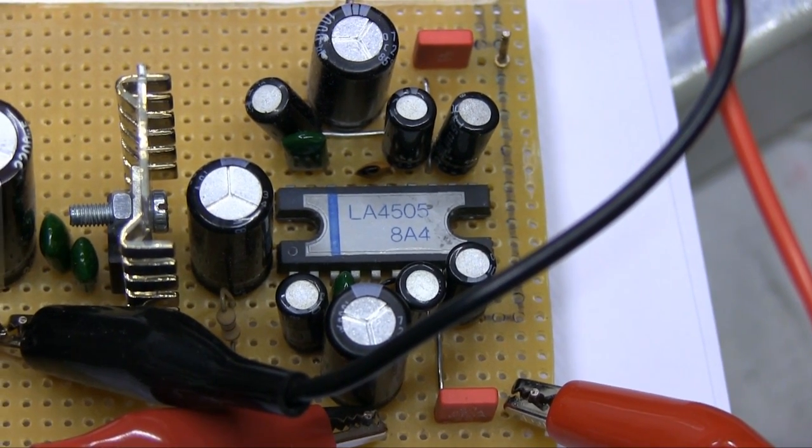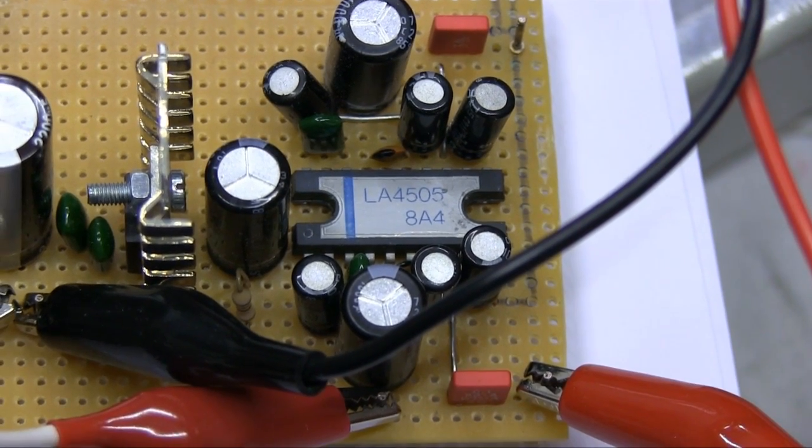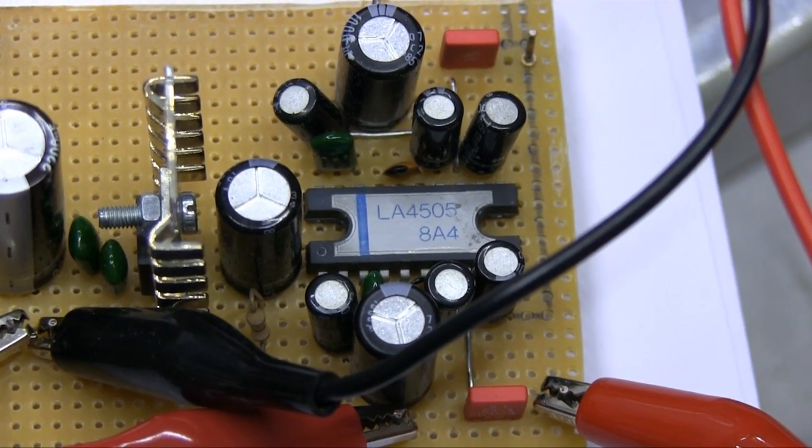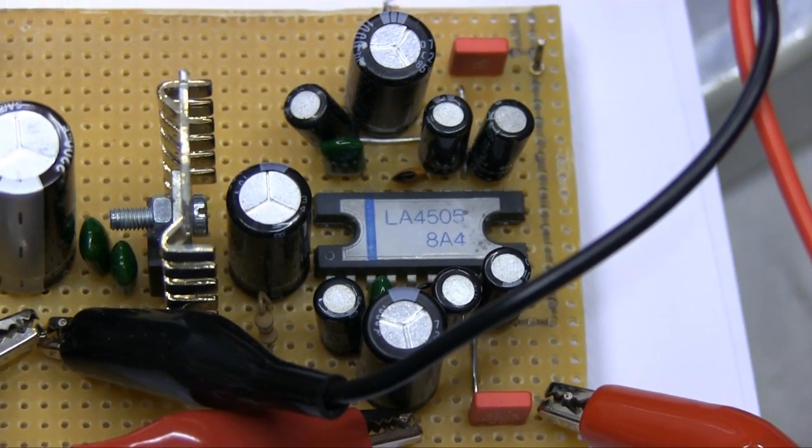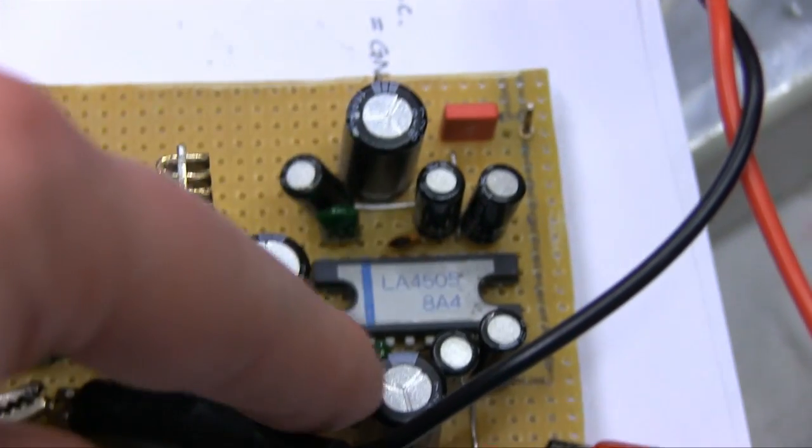Unfortunately the only thing I'm getting out from the outputs is 170 millivolts DC. That's of course straight at the chip. I'm not getting anything out of the whole unit because of the output capacitors. You can see.